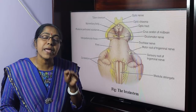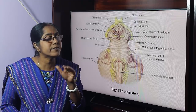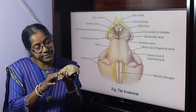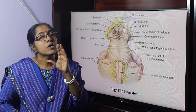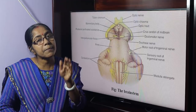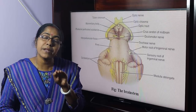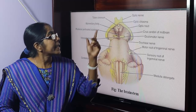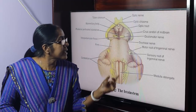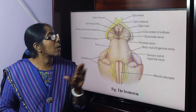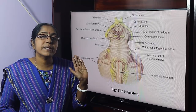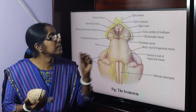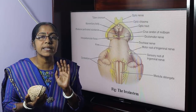In the cerebral hemispheres and cerebellar hemispheres, the arrangement is: outside grey matter, then white matter, then again masses of grey matter. But in the case of the brain stem and spinal cord, it is outside white matter and further grey matter inside. The midbrain is about 2cm in length and connects the forebrain with the hindbrain.